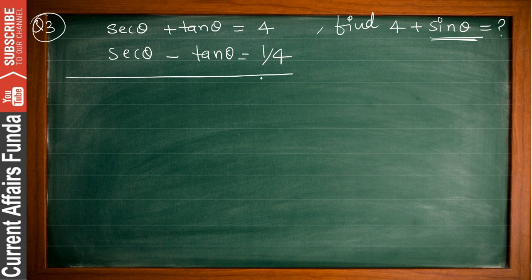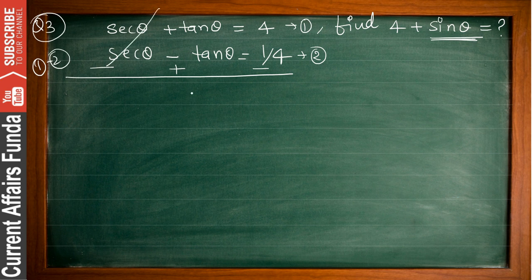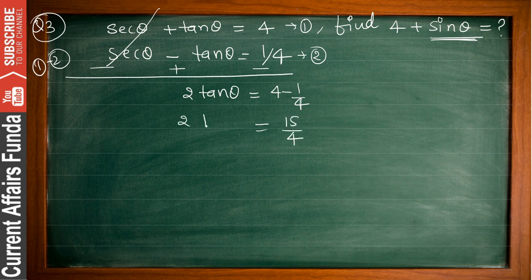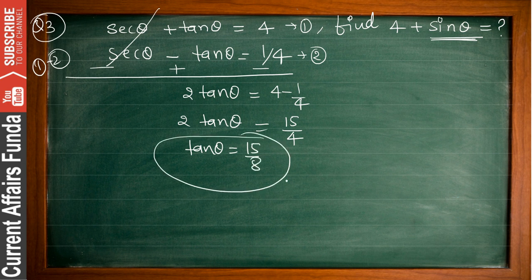Subtracting equation 2 from equation 1: sec cancels out, giving 2 tan θ = 4 − 1/4 = 15/4. So tan θ = 15/8. Since tan θ = perpendicular/base, the perpendicular is 15 and the base is 8. Using the right angle triangle, the hypotenuse = √(15² + 8²) = √(225 + 64) = √289 = 17.